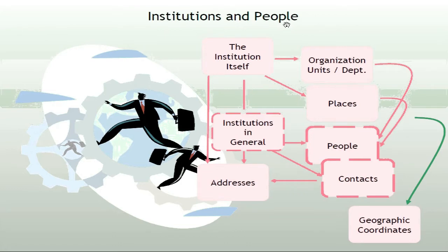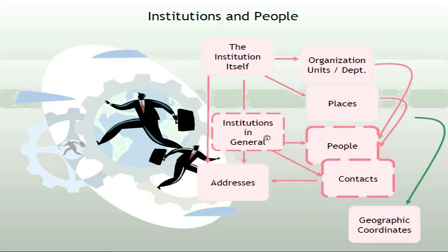Firstly, there is the institution itself, which consists of multiple organization units, is in many places, and is related to other institutions in general. Linked to organization units, locations, places, and third parties in general are People and Contacts. There are also addresses linked to all the entities mentioned above, as well as geographical coordinates linked to organization units, locations, places, and third parties in general. These coordinates allow us to map in Google Maps the location of all those entities.